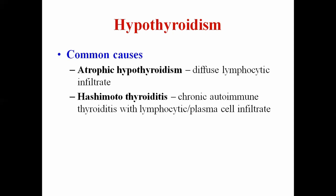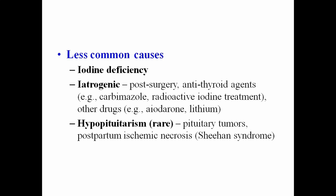Hypothyroidism means decreased thyroid hormone concentrations in circulation. The common cause is Hashimoto's thyroiditis — a diffuse lymphocytic inflammatory autoimmune thyroiditis. In this condition, antibodies are produced against thyroid peroxidase enzyme, which is destroyed by these antibodies. Without thyroid peroxidase, the thyroid gland is unable to synthesize thyroid hormone, leading to hypothyroidism. Less common causes include iodine deficiency.